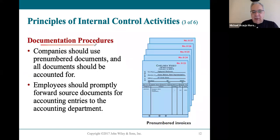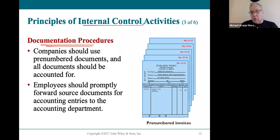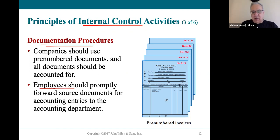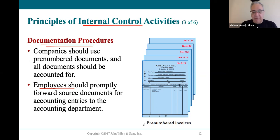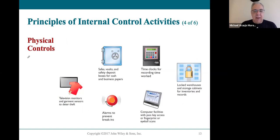Another popular control is the use of documents. Documents are a way to control various activities and have a record of what happened so companies can go back and check if anything went wrong. Employees need to use these documents to attest to their portion of the work. These documents protect everybody involved — you're signing off on the business activity — and that's a truthful statement.